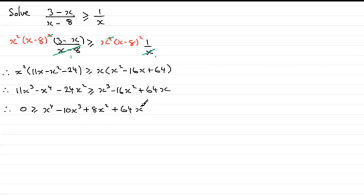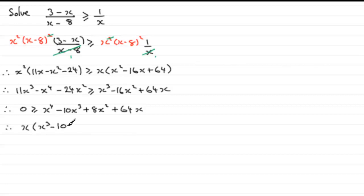Each of these terms contains a common factor of x, so we pull that out and rewrite the expression on the left-hand side: x times (x cubed minus 10x squared plus 8x plus 64), and that is less than or equal to 0.